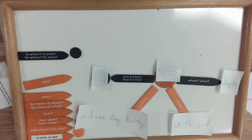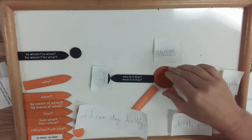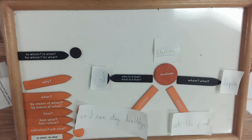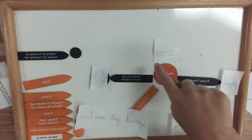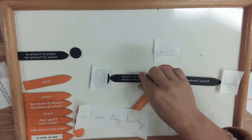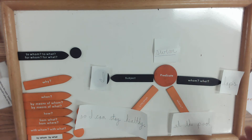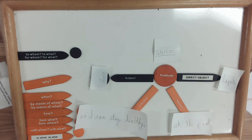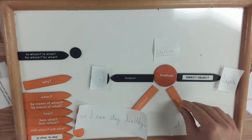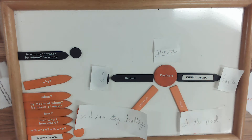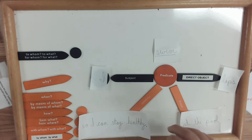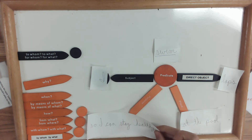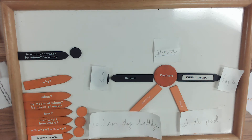So you quiz yourself: 'swim' is the main verb in the sentence — that is called the predicate. 'I' am the one performing the predicate, the sentence is about me — I am the subject. 'Laps' are what's receiving the action — that is the direct object. 'At the pool' answers place — where I am. And 'so I can stay healthy' is the purpose of swimming laps.